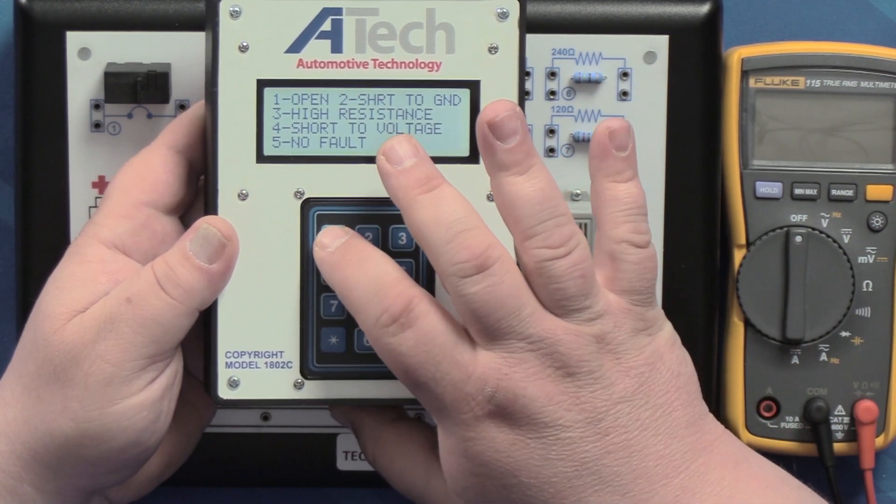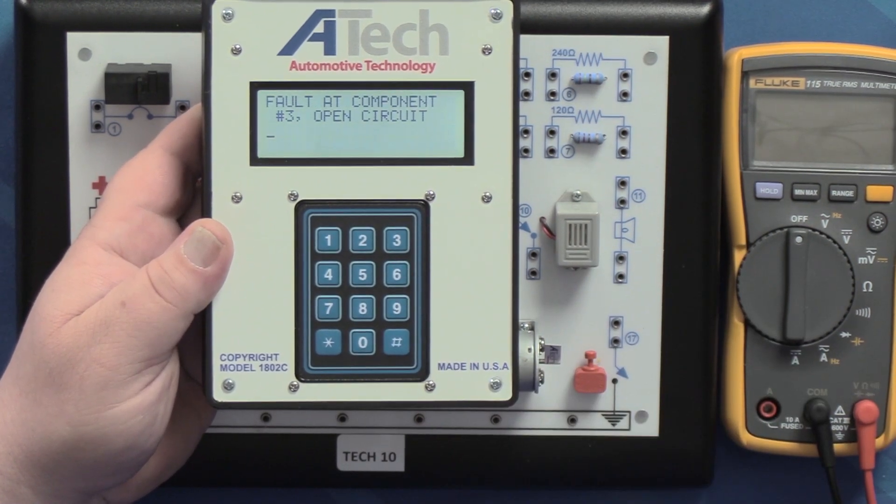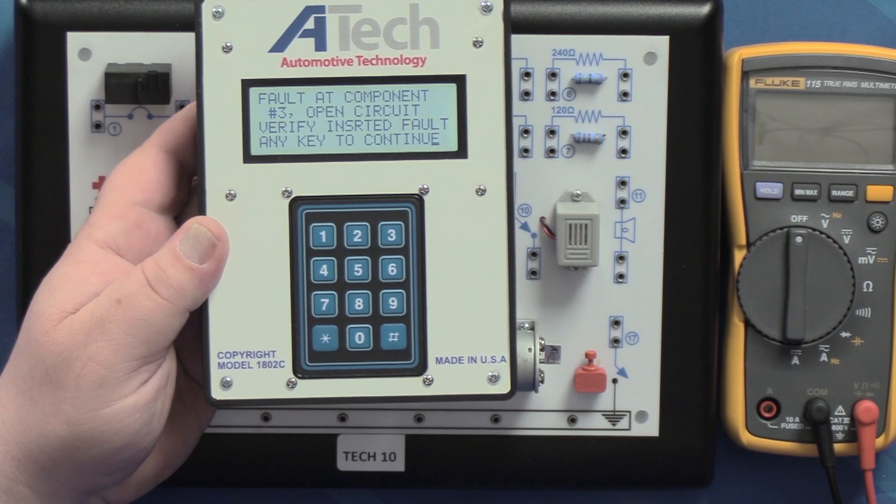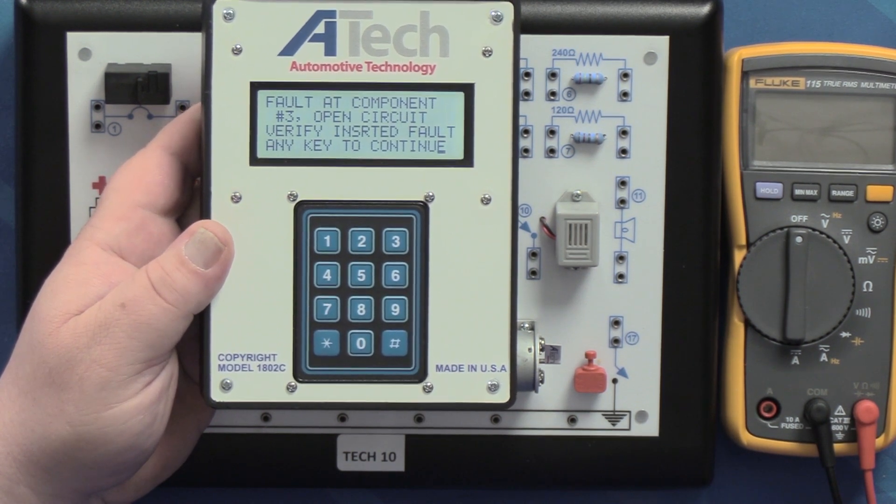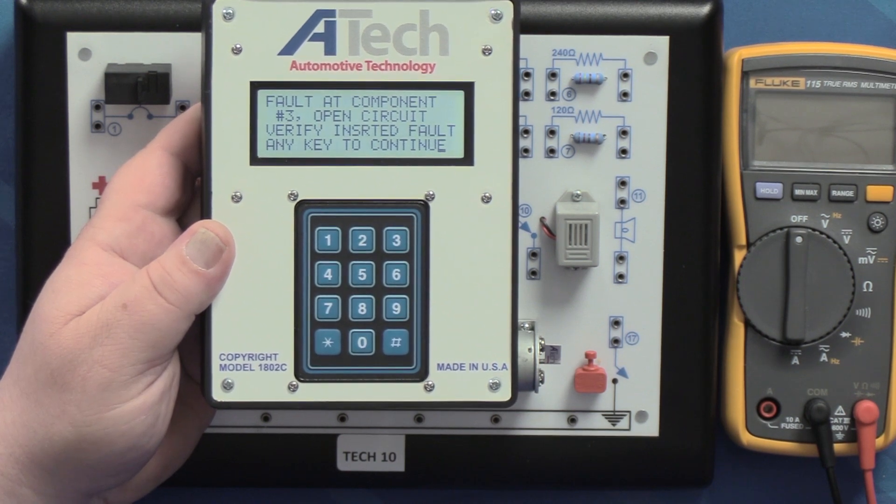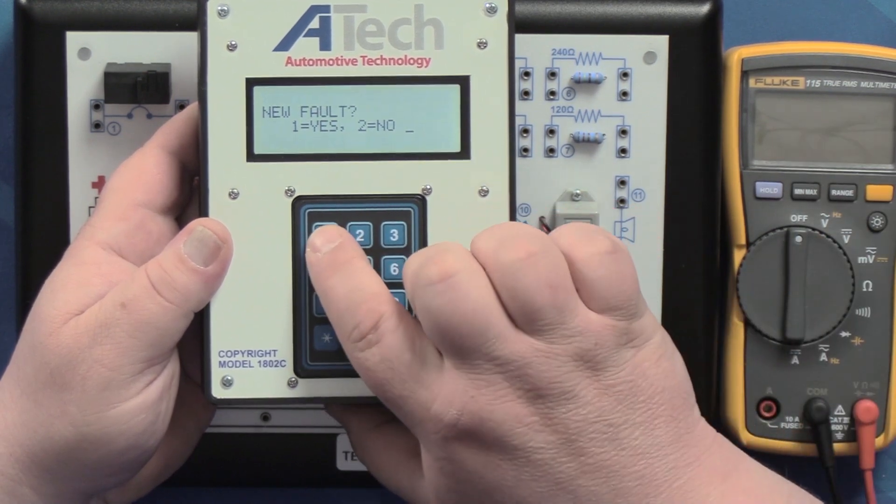For this one we're going to say we think that the bulb is open, so we're going to press that in there and then it's going to let us know that we got an incorrect answer. When you are in troubleshoot mode it will tell you the fault at component, with what component number the fault was at and what was actually wrong with it, and then you can press any key to move on to a new fault.